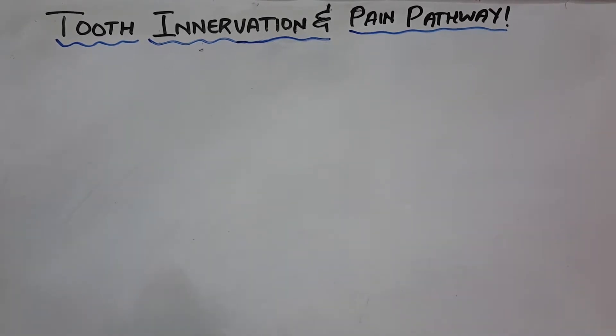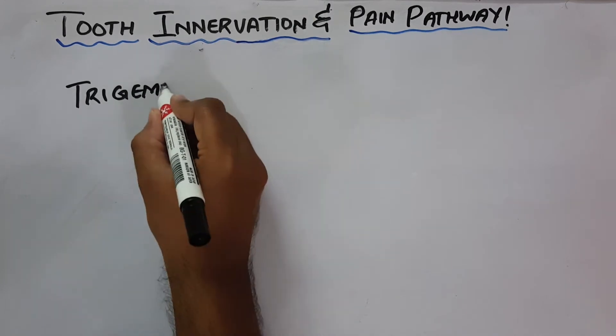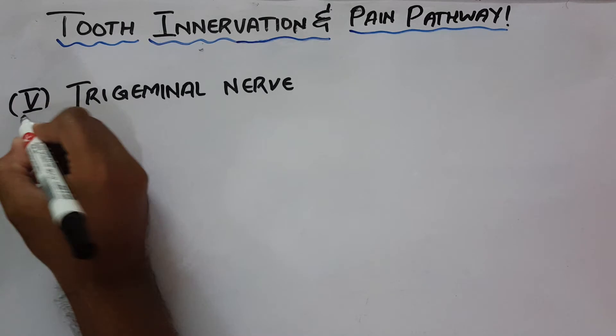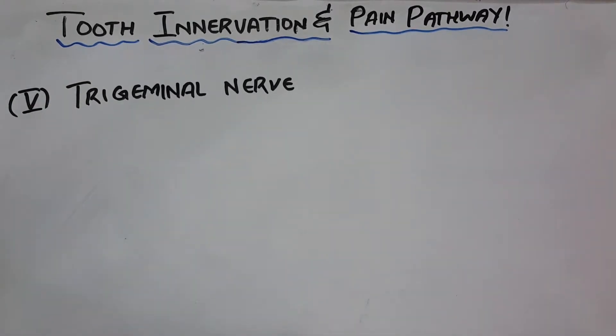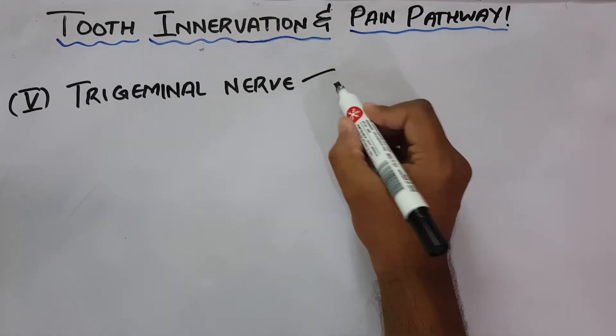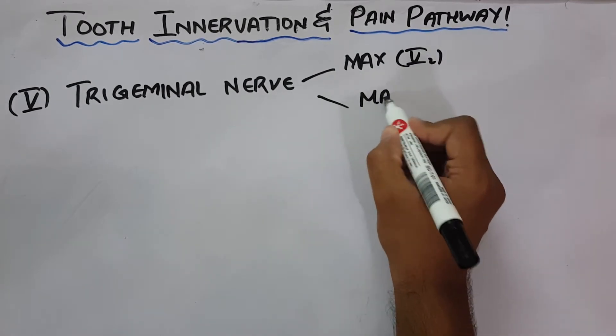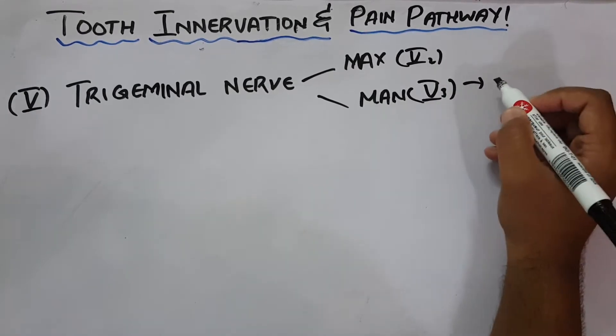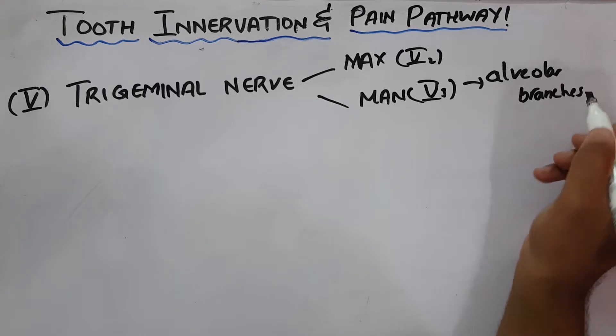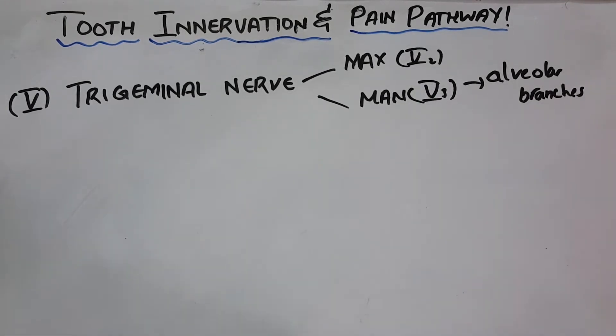The tooth is supplied by the trigeminal nerve. The trigeminal nerve is the fifth cranial nerve, and this nerve has three branches: an ophthalmic branch, maxillary, and a mandibular branch. The maxillary and the mandibular divisions supply the teeth through their alveolar branches.